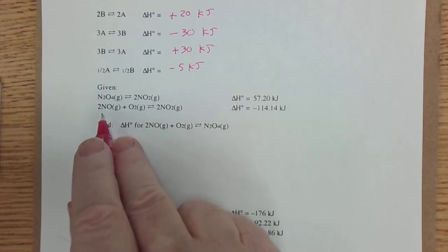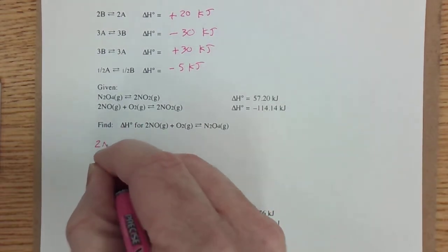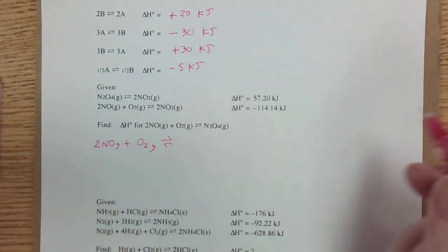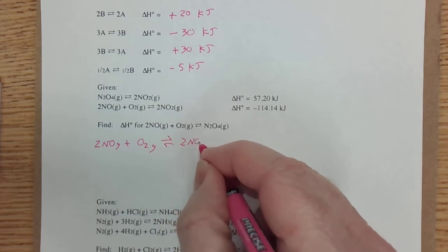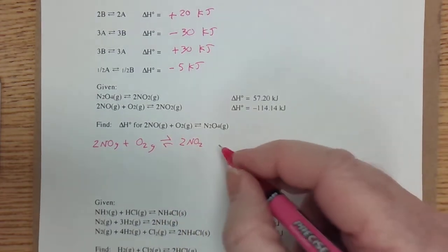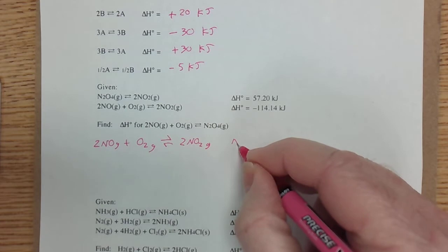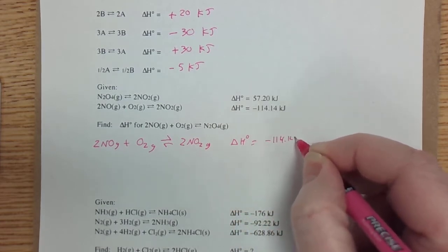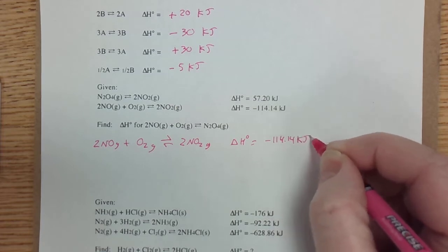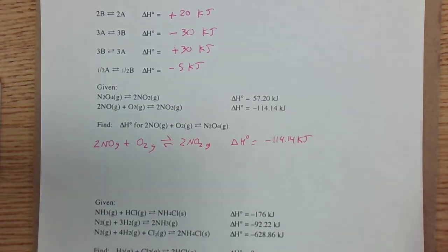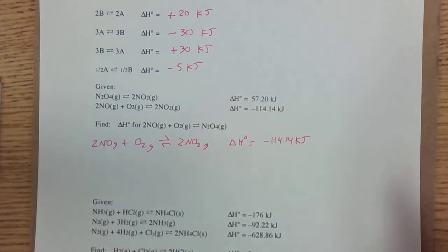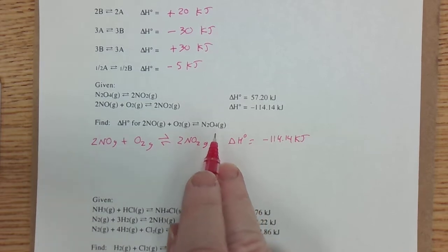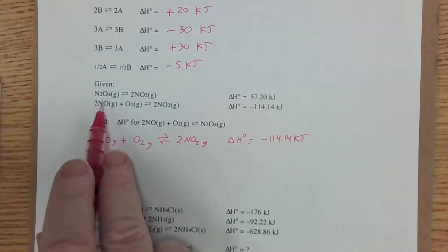When I see this first one, I've got the 2NO gas and the O2 gas on the reactant side where I want it. It turns into the 2NO2 gas. Delta H naught is unaffected. No changes in sign, no changes in value, nothing like that.